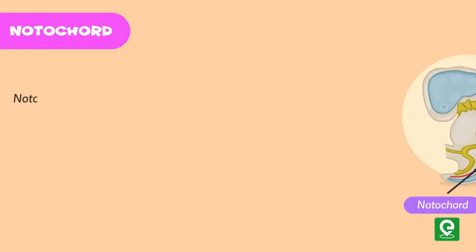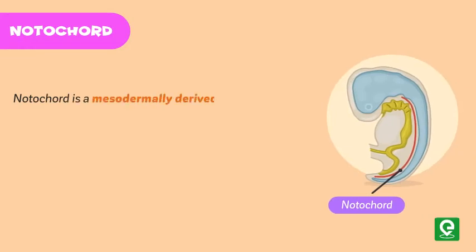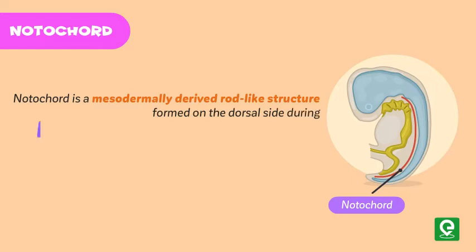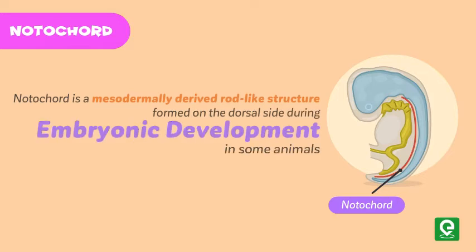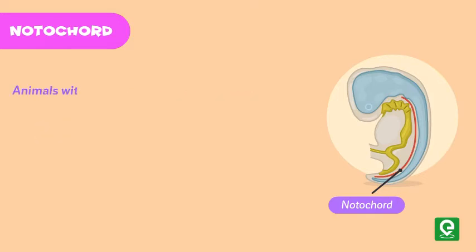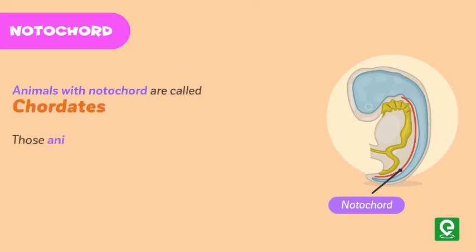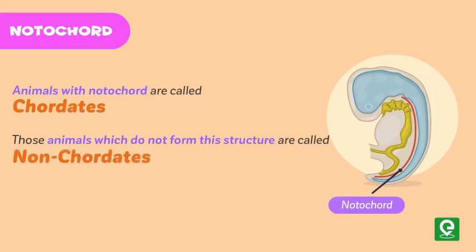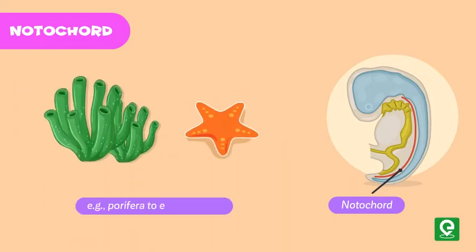Notochord: the notochord is a mesodermally derived rod-like structure formed on the dorsal side during embryonic development in some animals. Animals with a notochord are called chordates, and those which do not form this structure are called non-chordates — examples: porifera to echinoderms.